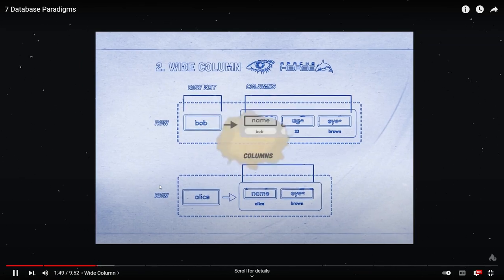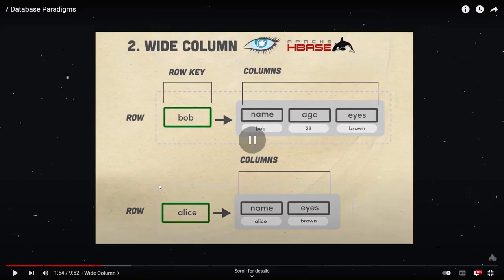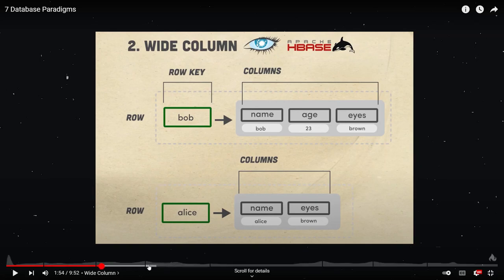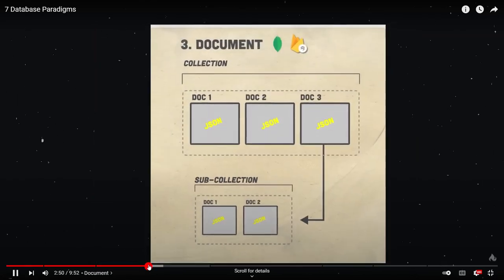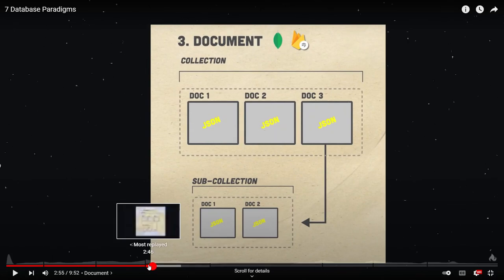That brings us to wide-column databases. Popular options in this family include Cassandra and HBase. Cassandra takes a key-value approach, but instead of assigning a key to a single value, you have a number of values. So you could have user one with John, 25 years old, and blue eyes — a number of values under one key. It's still a very simplistic database though. Options in the document family include MongoDB, Firestore, DynamoDB, CouchDB, and Elasticsearch — these are different kinds of databases.